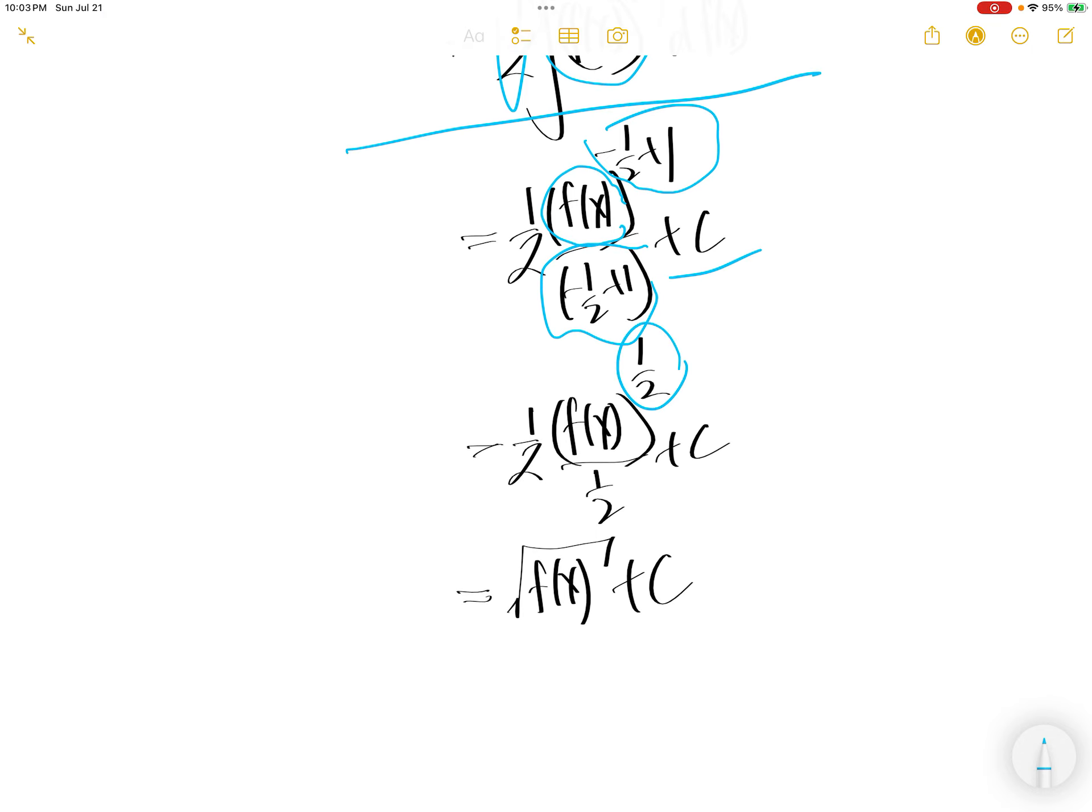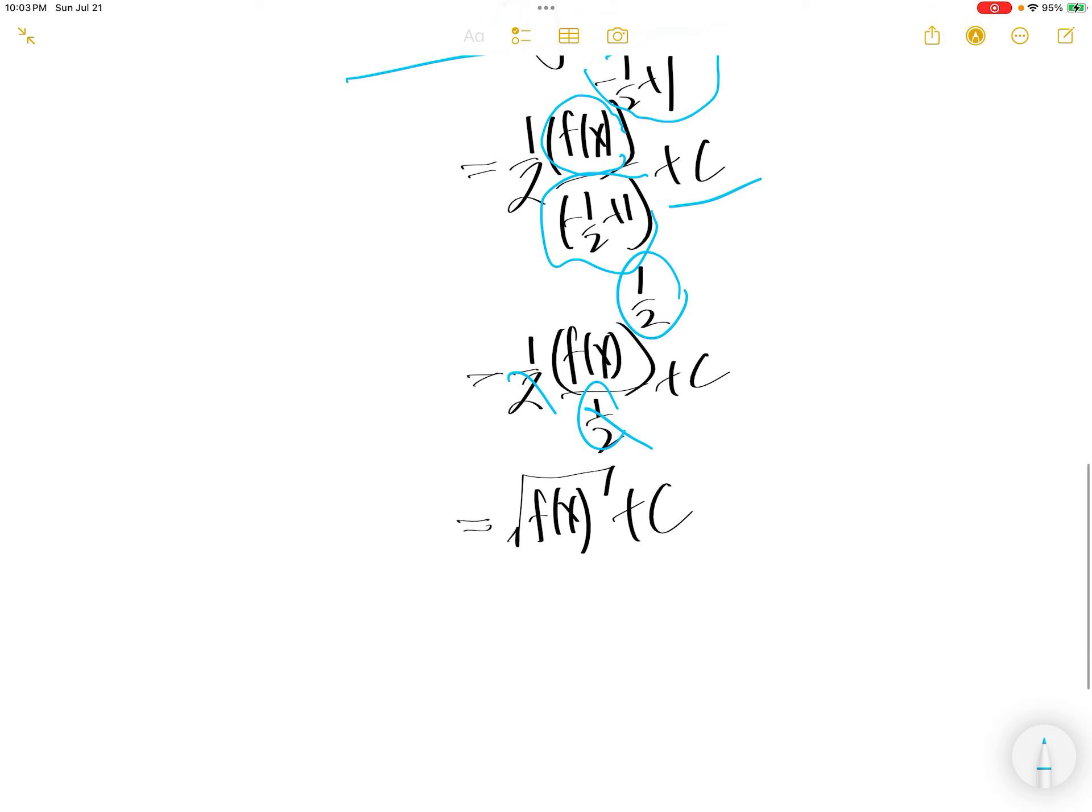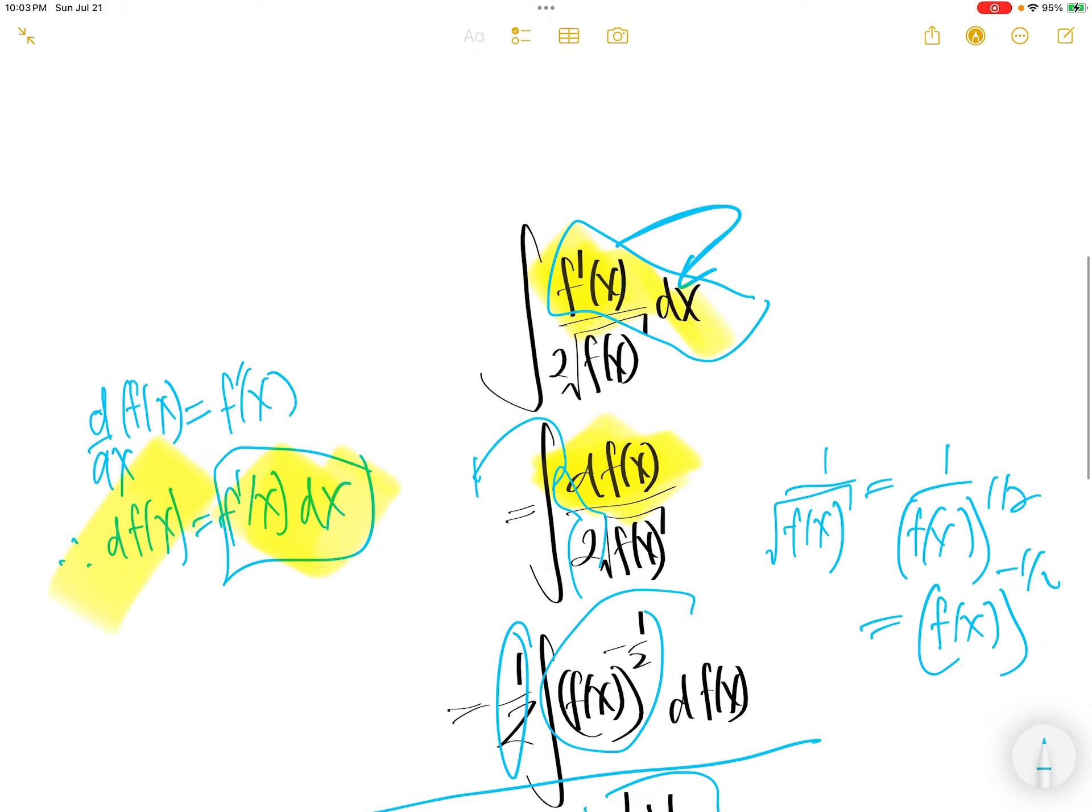Negative half plus 1 is half. The two here cancel, leaving f of x to the power of half, which is square root of f of x plus c. Done.